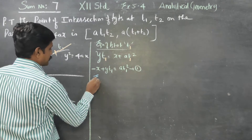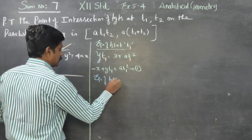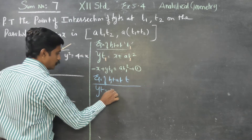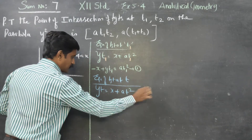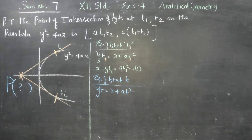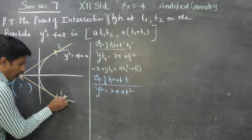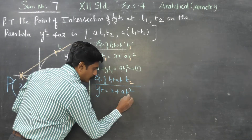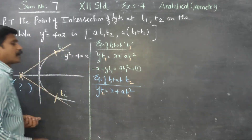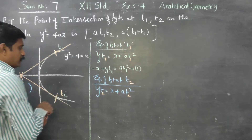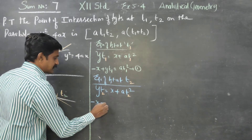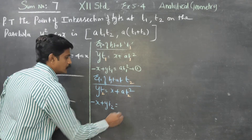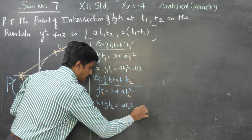Again, the equation of tangent at T is yT = x + aT². But now I want the tangent at point T2, so substituting parameter T2 and reassembling: -x + yT2 = aT2². This is equation number 2.